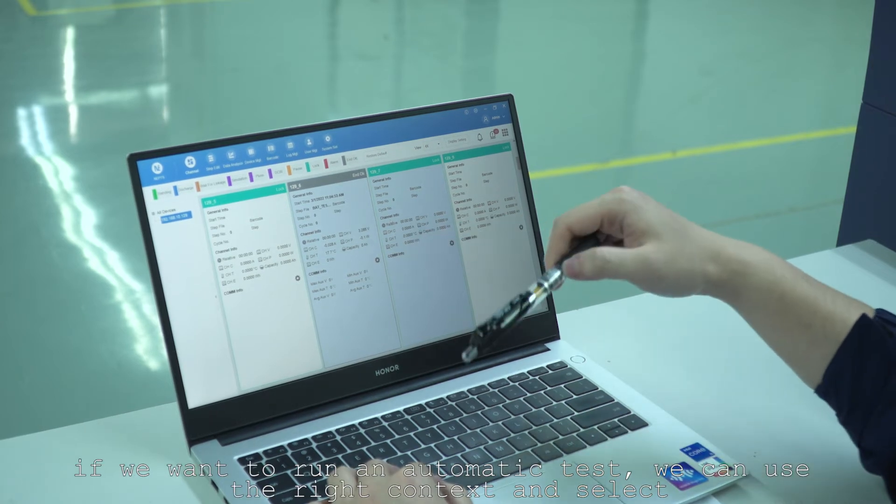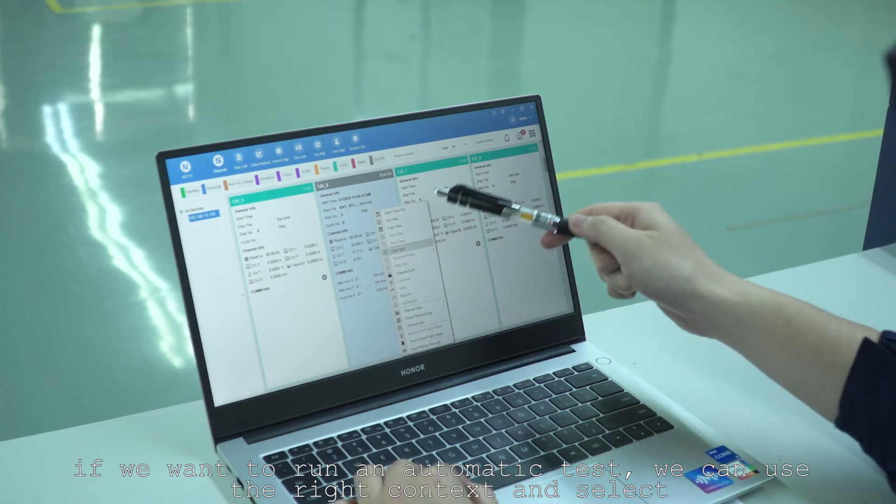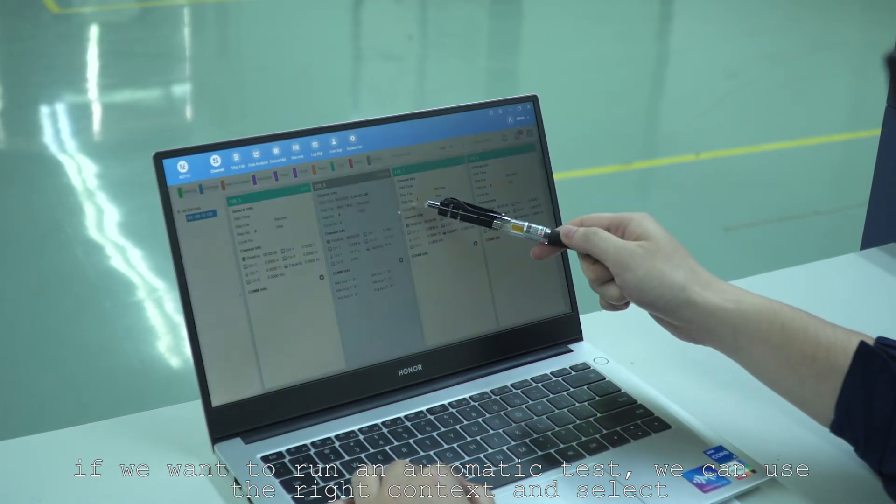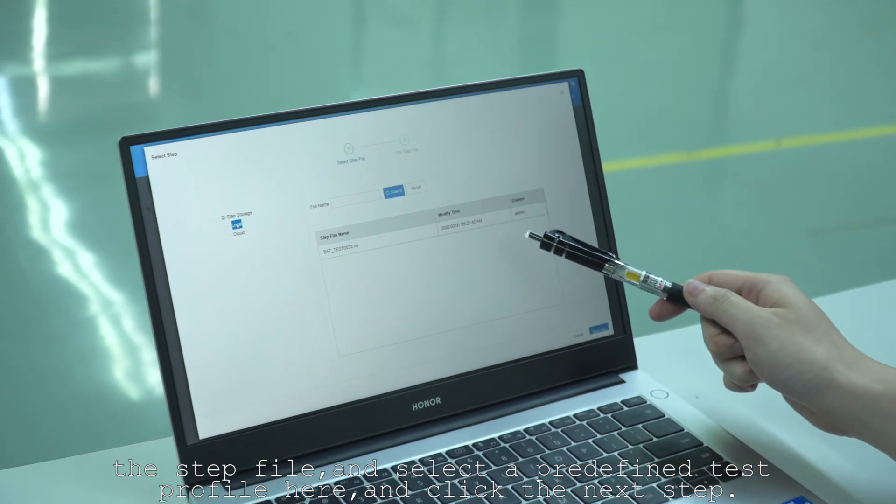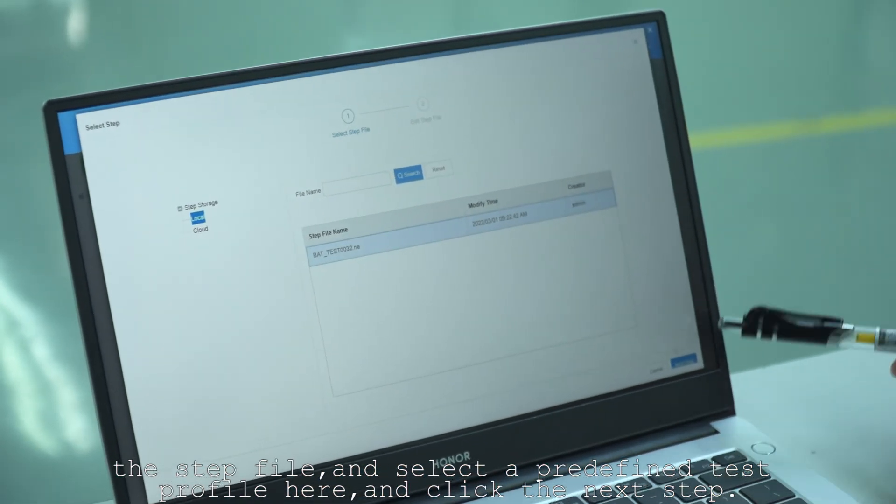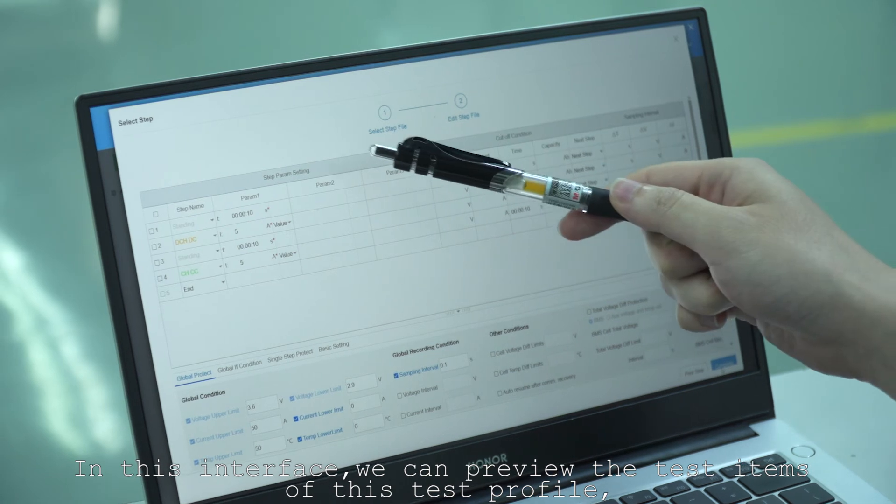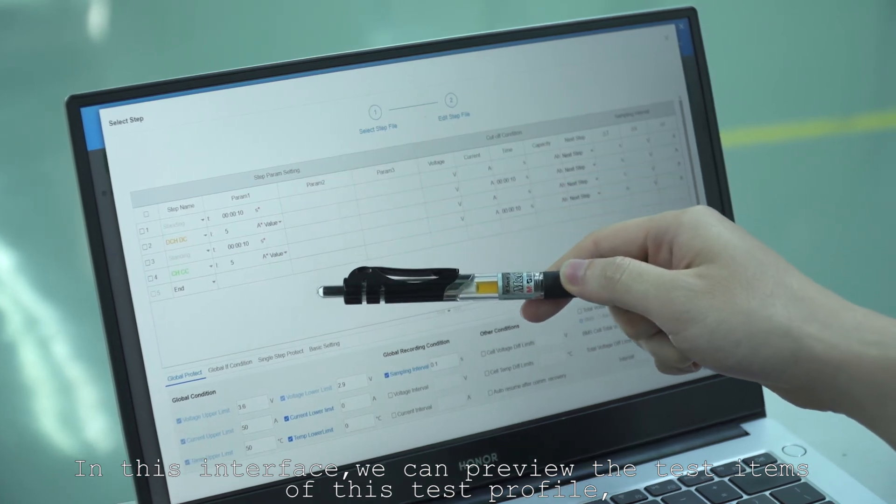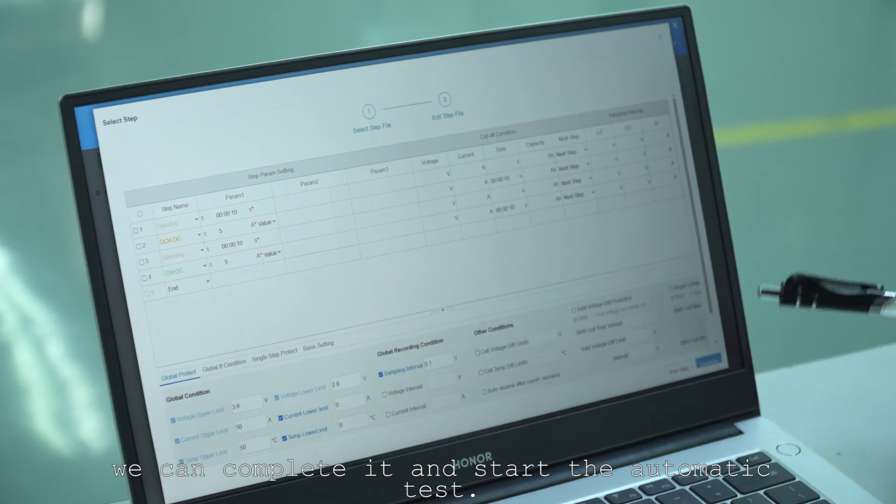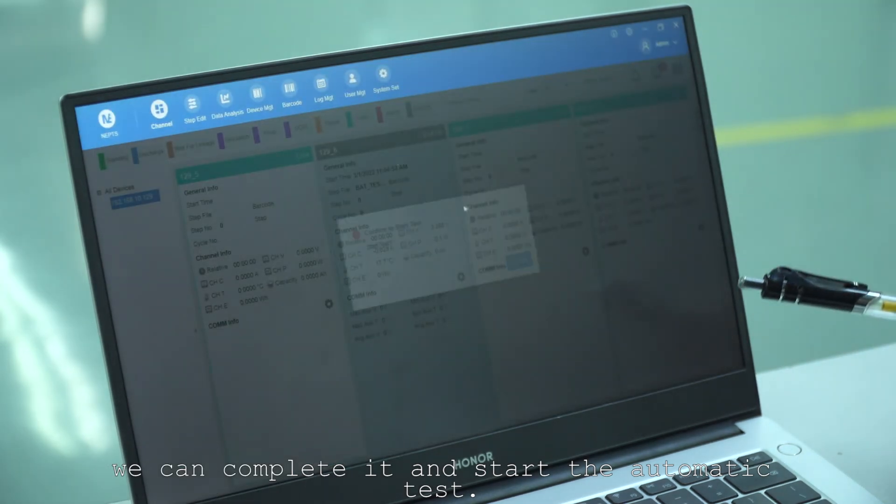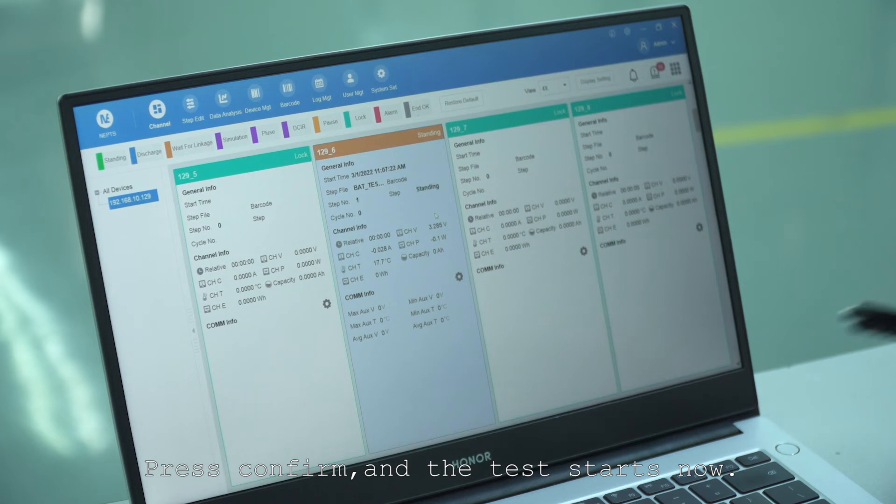If we want to run an automatic test, we can use the right context and select a step file. And select a predefined test profile here and click next step. In this interface, we can preview the test items of this test profile. If we think it's okay, we can complete it and start the automatic test. Press confirm and the test starts now.